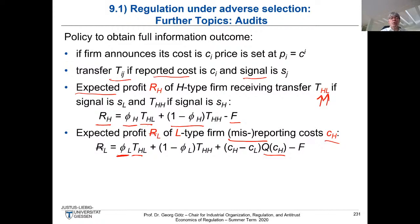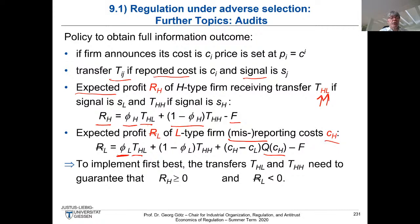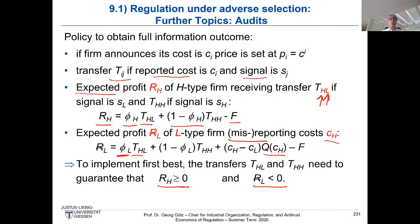To implement the first best — price equal to marginal cost and rent equal to zero — we must construct transfers T_HL and T_HH such that: first, the participation constraint for the high type holds (R_H ≥ 0), and second, the incentive compatibility constraint of the low type holds (R̄_L ≤ 0), meaning it cannot gain from misreporting. You have two conditions and two instruments (T_HL and T_HH), and you will see how we can produce the first best as long as the signal is informative and φ_L > φ_H.